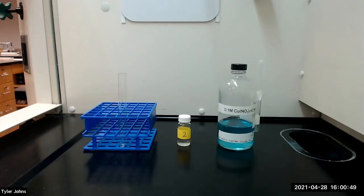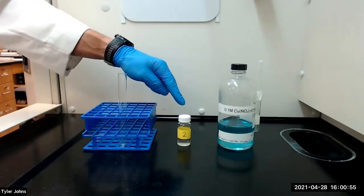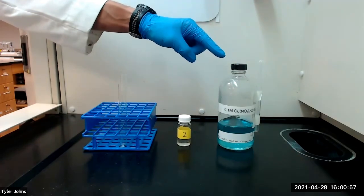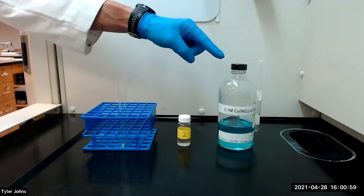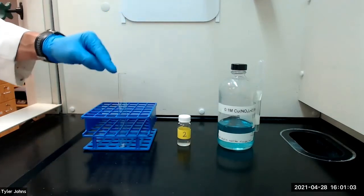We will next test the relative stability of an unknown species. We have been given unknown number two. We will begin by adding one milliliter of 0.1 molar copper II nitrate solution and one milliliter of unknown number two to a test tube.